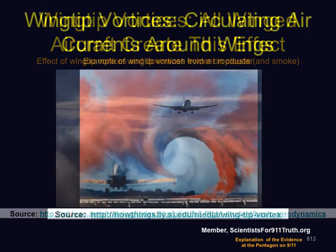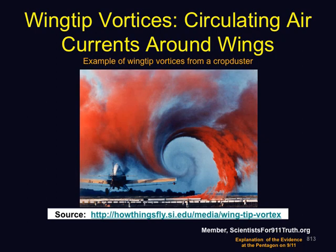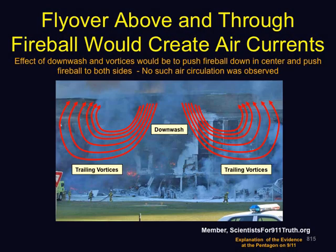You can see these vortices sometimes as planes fly through clouds. Here's one example. Here a crop duster passes through colorful smoke, and you can see the vortices as the plane passes close to the ground. Here's a test flying through smoke to display the vortex. Interestingly, if there had been a flyover of the Pentagon, the fireball would have shown evidence of the rotating air currents, but none was observed.